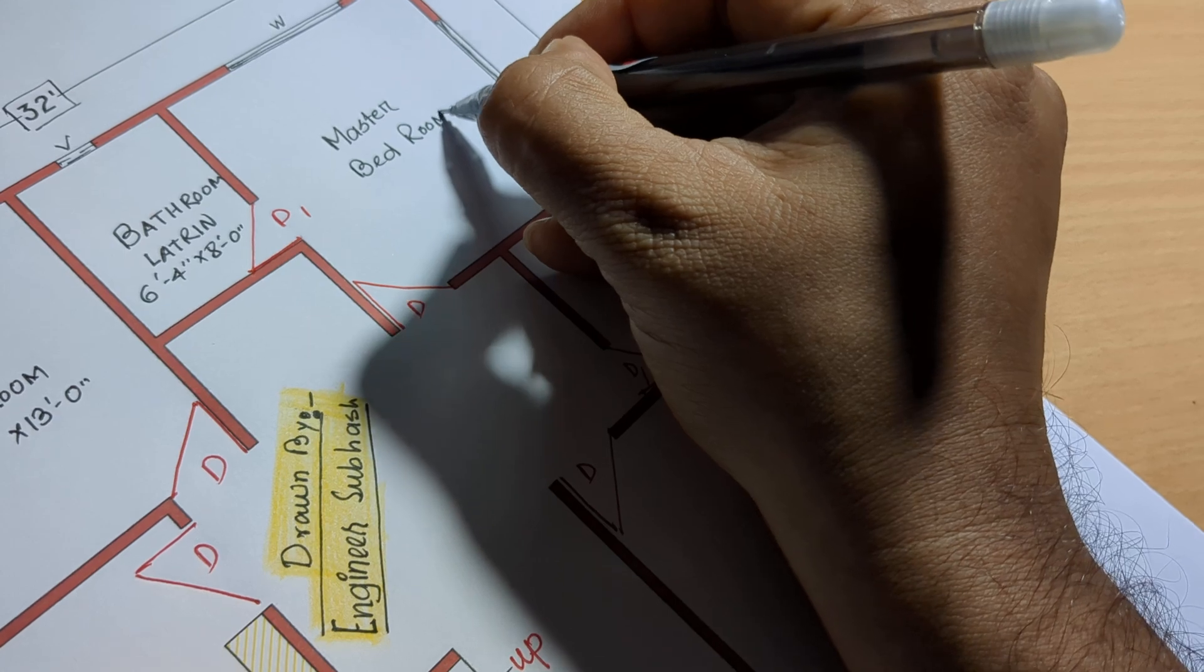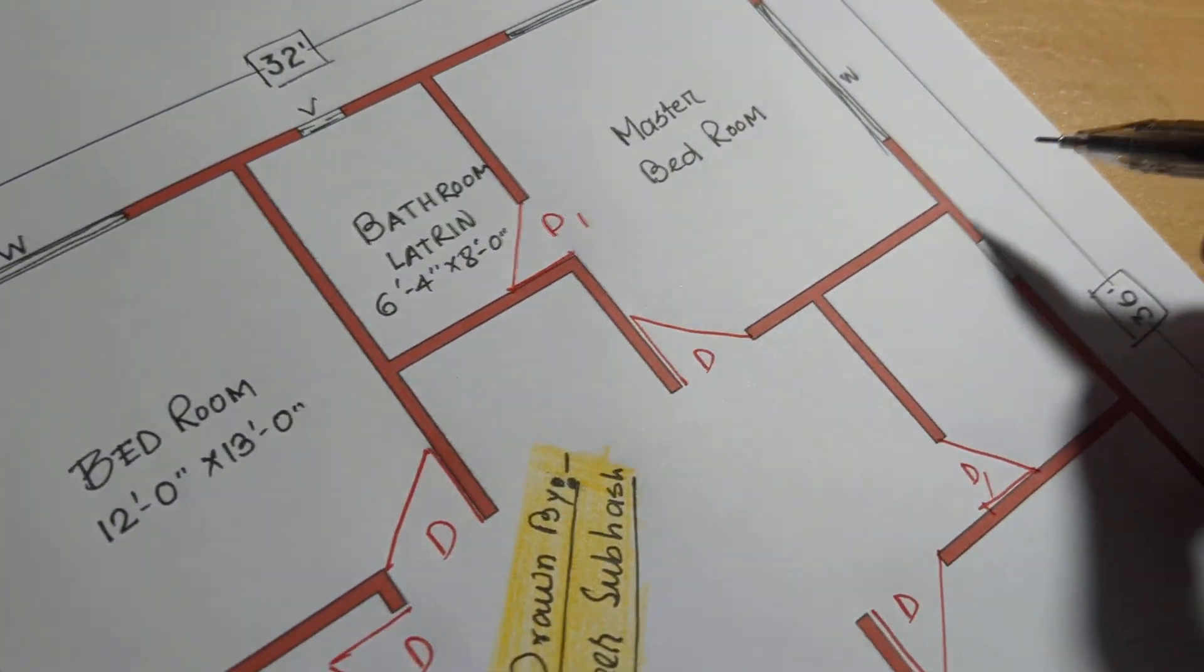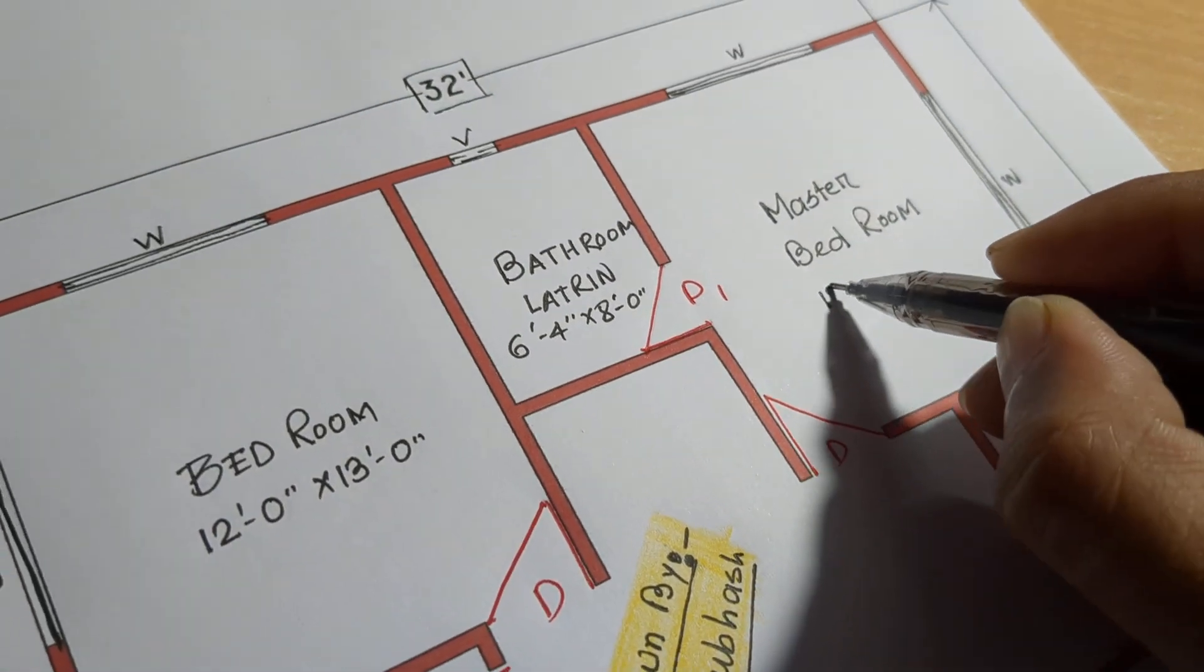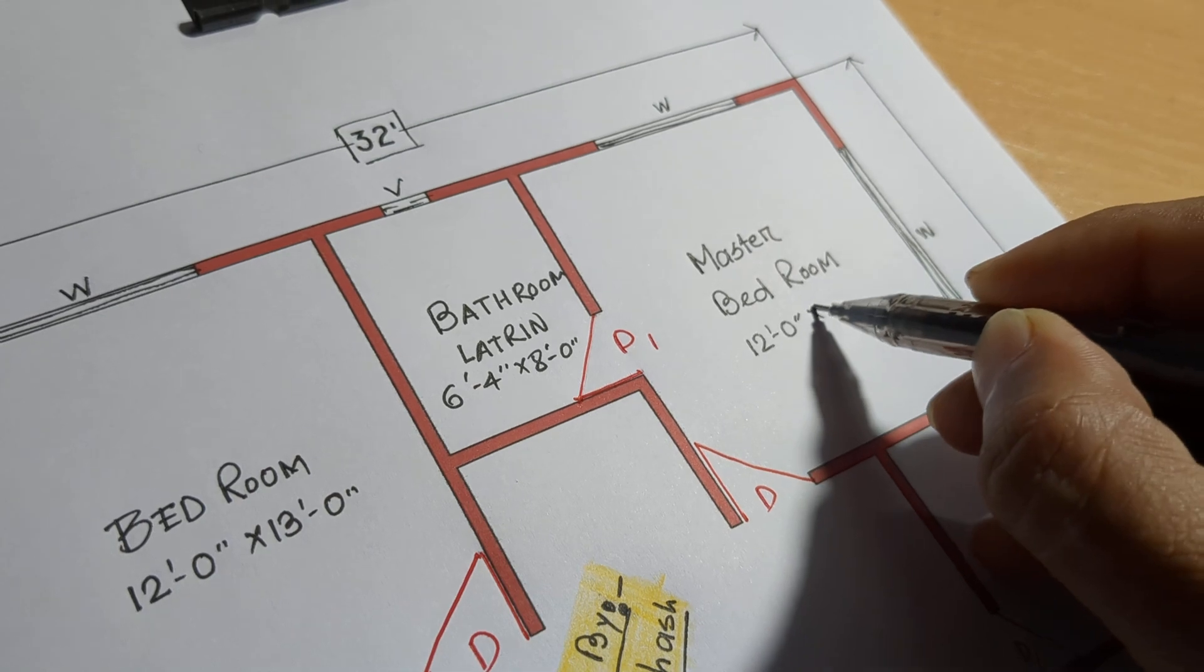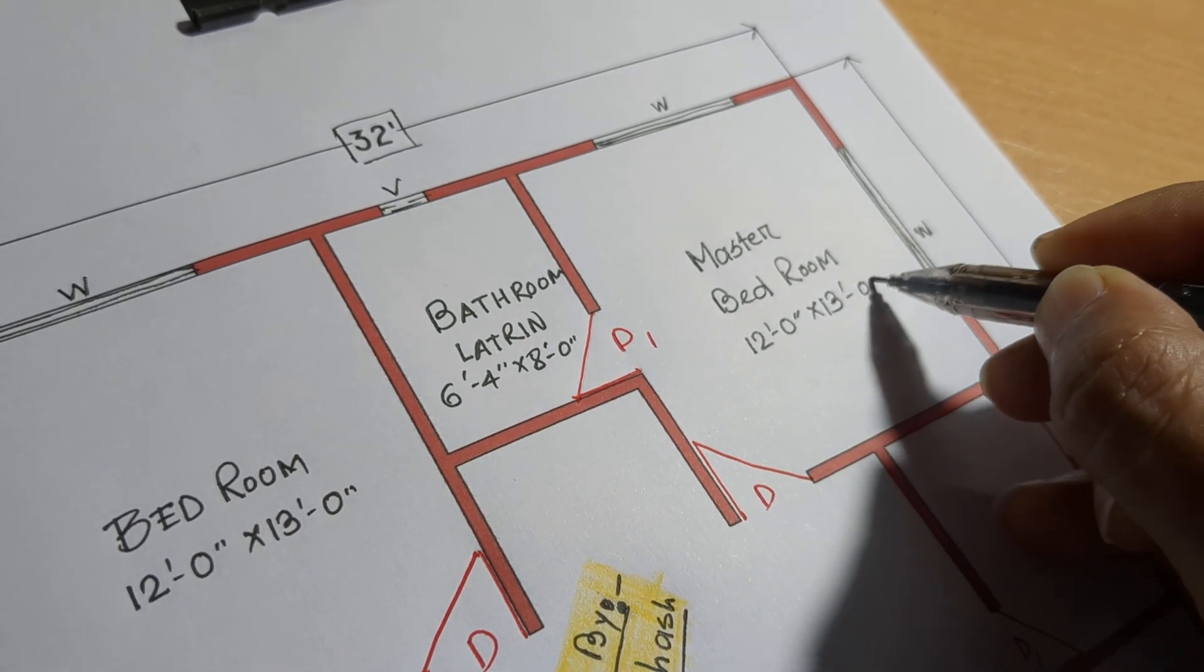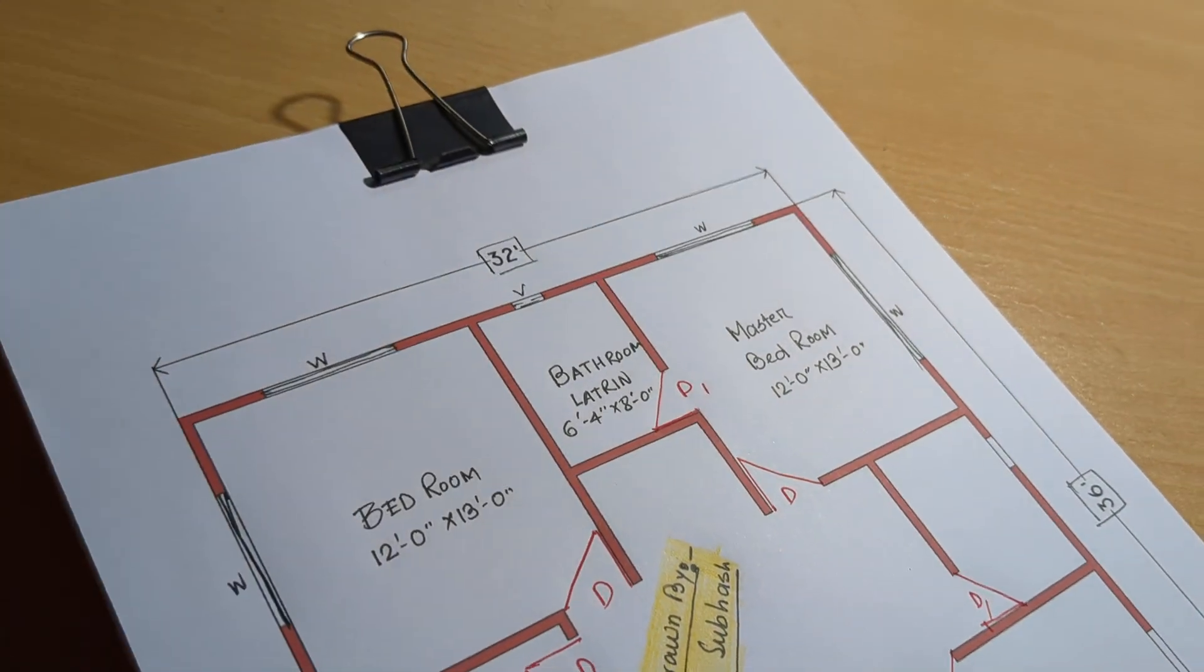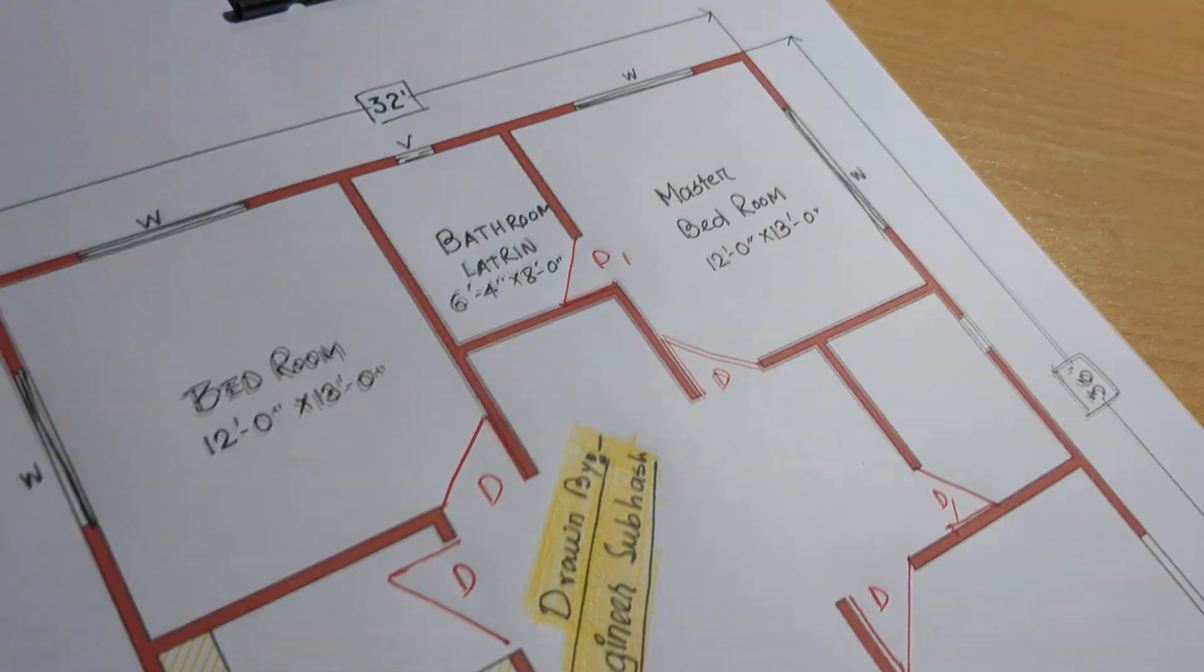Master bedroom: 12 feet 0 inch by 13 feet 0 inch. Okay, next.